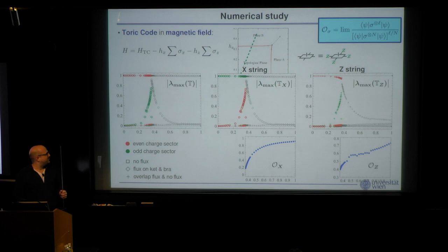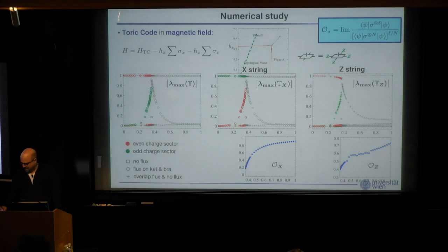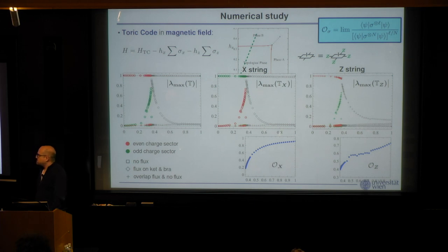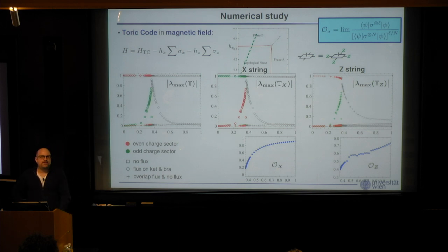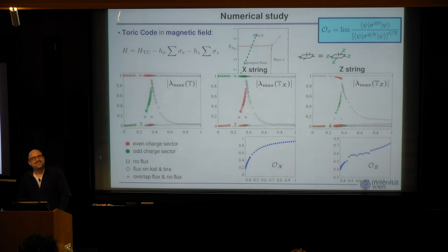That concludes the first part of the talk. The order parameter can be used to verify the presence of topological order, modulo error bars in thermal states. For numerical simulations, the better approach — which was the planned second part of the talk — is to push the string operator to the virtual PEPS level at the RG fixed point and measure it there, even away from the fixed point. This is not physically measurable but is more efficient for simulations and gives access to more quantities.